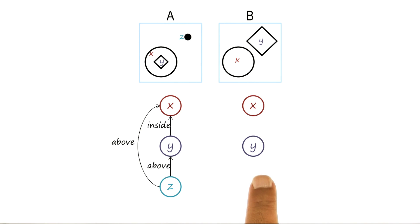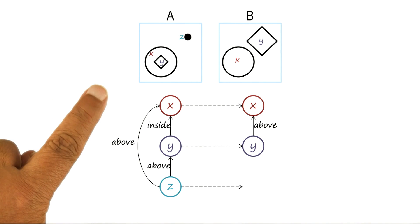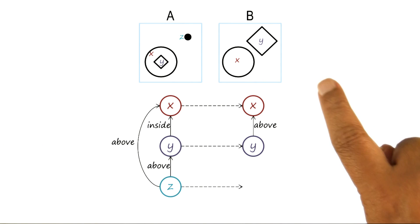We can do exactly the same thing for the image B. The objects and the relationships between them. Y is above X. Now that we have represented our knowledge of image A and our knowledge of image B, we want to capture somehow the knowledge of the transformation from A to B.